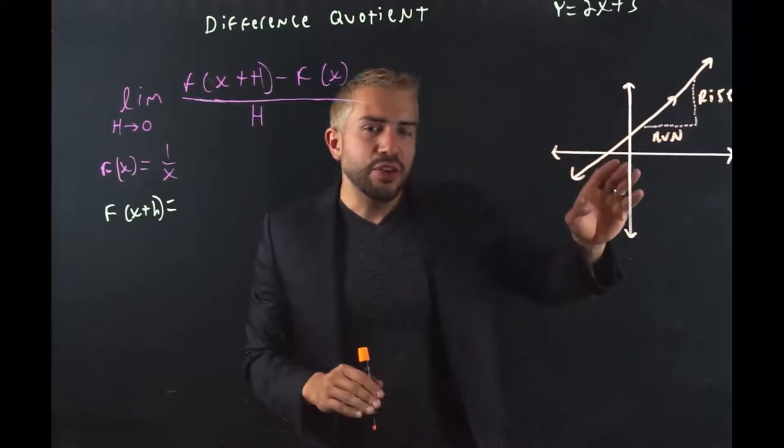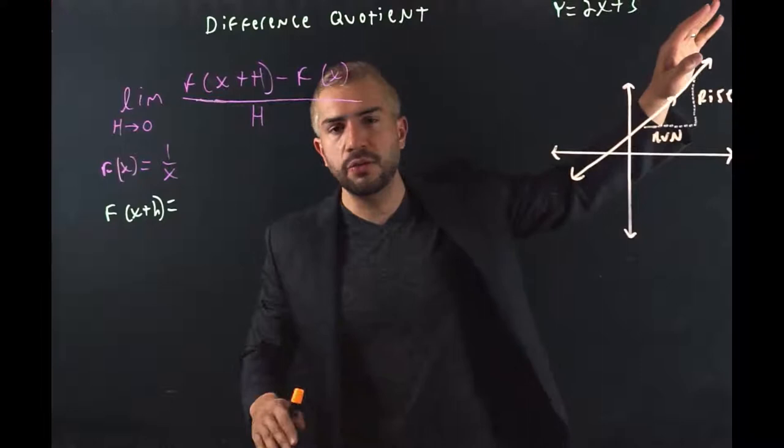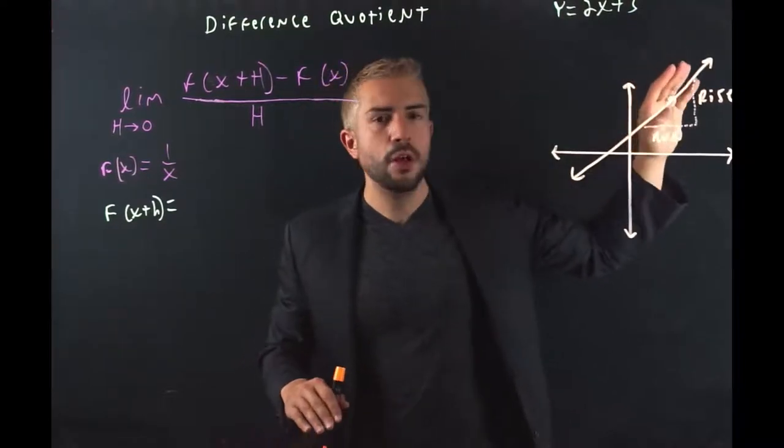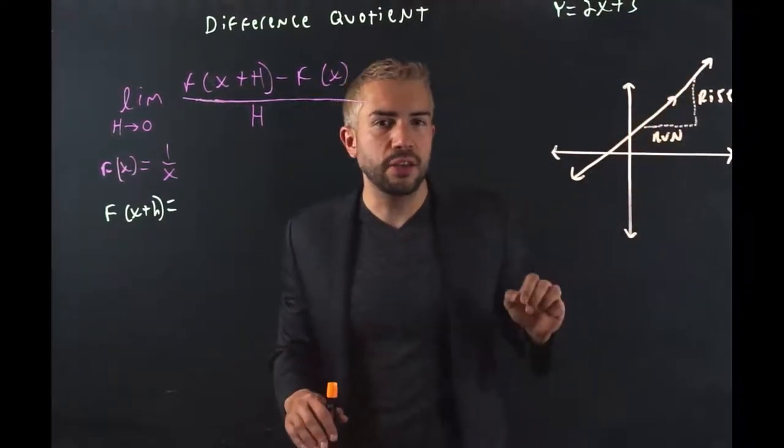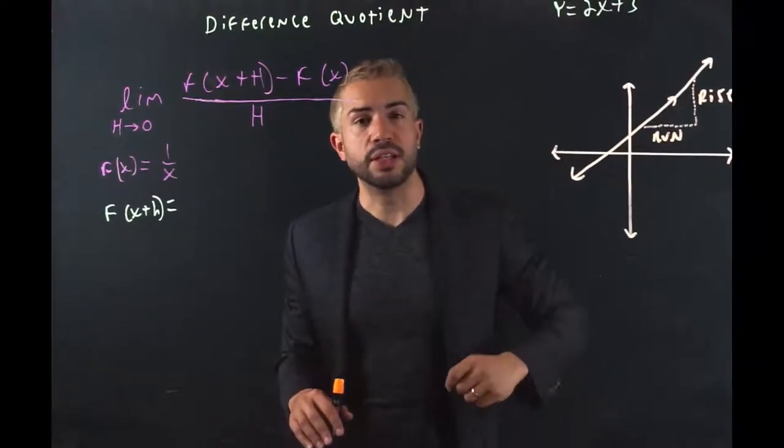Now with linear functions, the slope is consistent throughout the line, all the way from negative infinity to positive infinity. But what if we have higher degree functions, like f(x) = x squared, or x cubed?